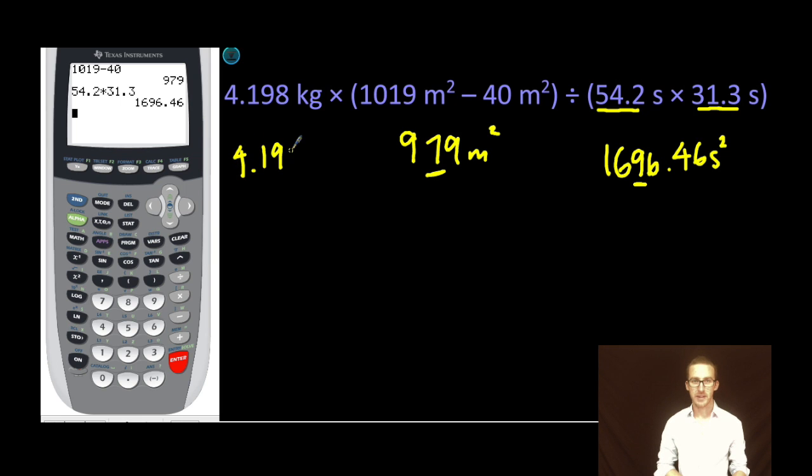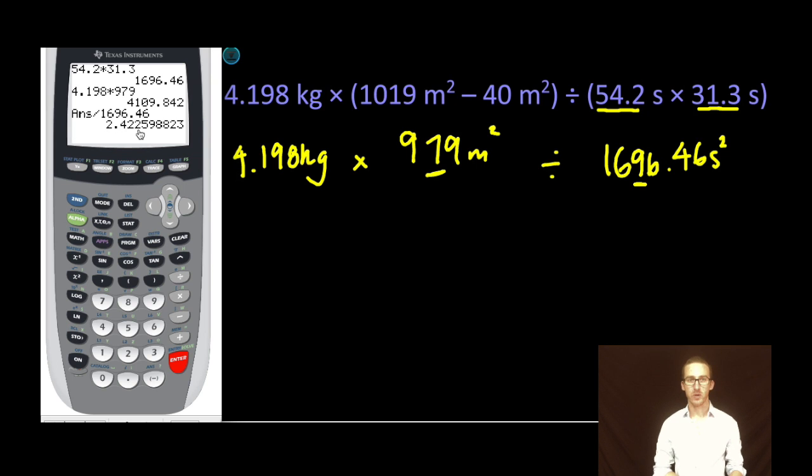Okay, so I'm going to rewrite this one here to keep things straight. It's going to be this number times 979 divided by 1,696.46. Calculator time. 4.198 times 979. I like to go one step at a time. Divided by 1,696.46. Ended up with 2.422 and all of this jazz.